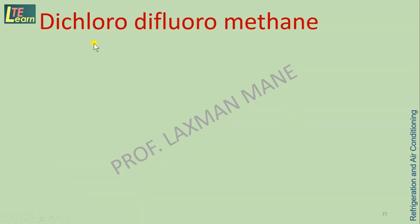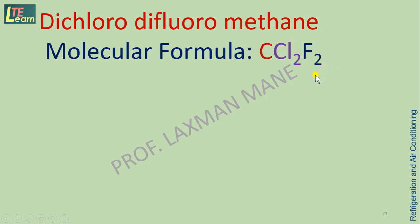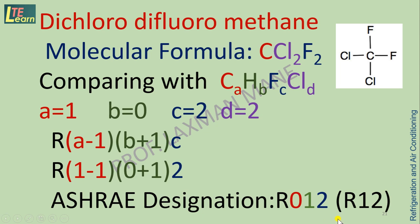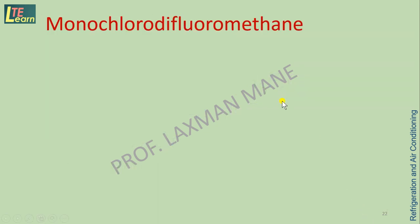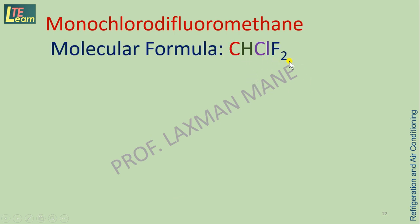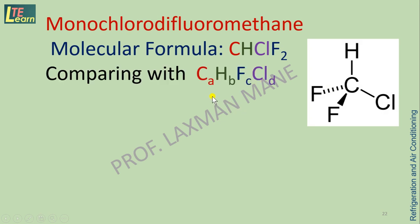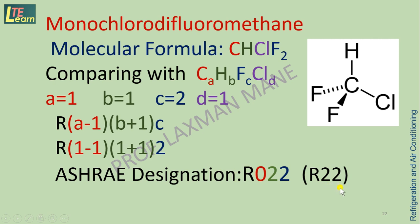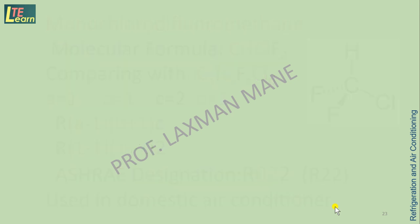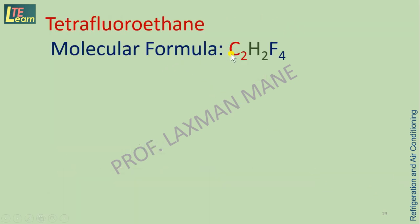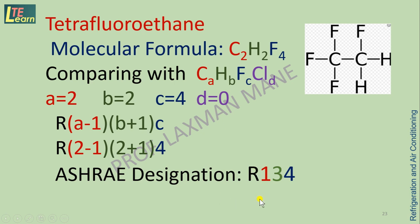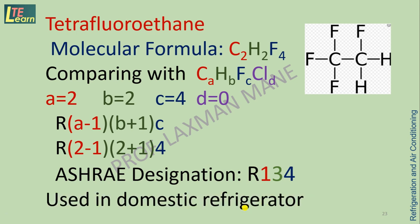Similarly, for dichlorodifluoromethane with molecular formula CCl₂F₂, following the same procedure, we find ASHRAE designation R12. For monochlorodifluoromethane with chemical formula CHClF₂, following the ASHRAE designation procedure, we find R22 — this refrigerant is used in domestic air conditioners. For tetrafluoroethane with chemical formula C₂H₂F₄ — carbon atoms 2, hydrogen atoms 2, fluorine atoms 4 — following the procedure, we find ASHRAE designation R134a, which is used in domestic refrigerators.